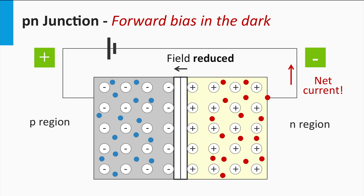If we apply a forward bias on such a P-N junction in the dark, the width of the depletion zone gets smaller. The diffusion of the majority charge carriers is significantly enhanced and overrules the drift of minority charge carriers. The P-N junction becomes conductive and is able to generate a current.